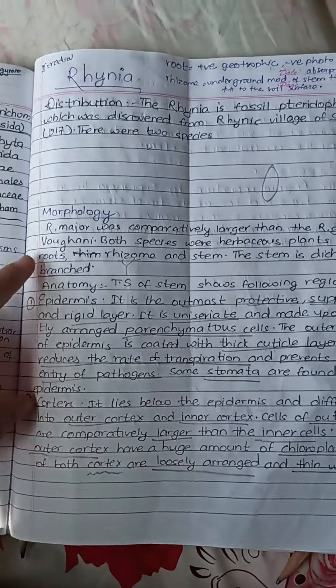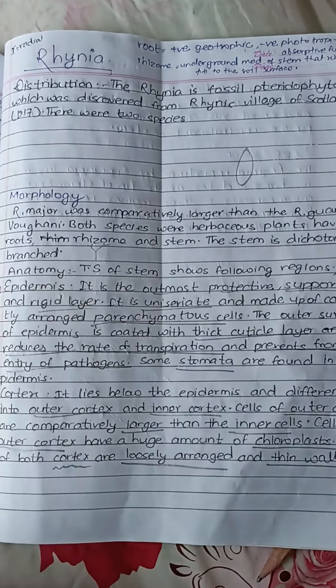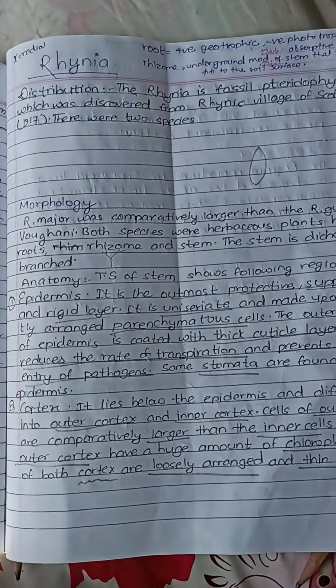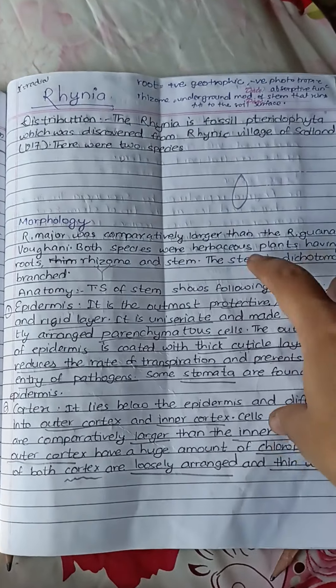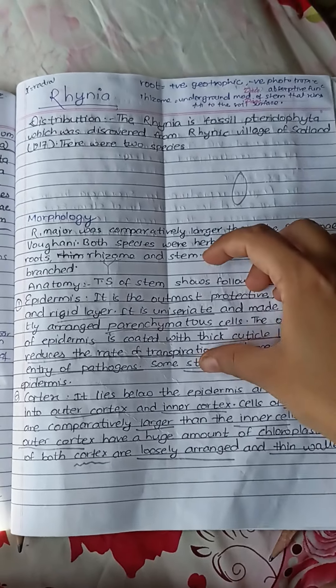Now we can do morphology. In morphology, we can do anatomy of stem. Stem has an epidermis. It's an outermost protective layer which is parenchymatous cell.